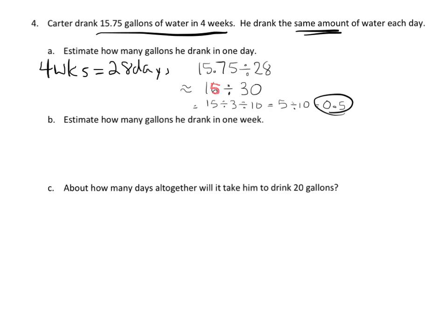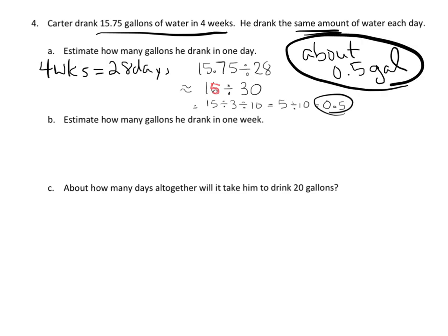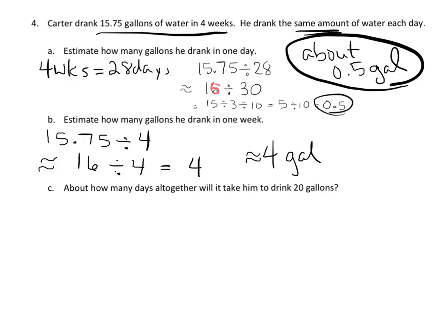So our estimation for one day is about 0.5 gallons — about half a gallon per day. Now, estimate how many gallons he drank in one week. We take 15.75 and divide by 4 weeks. I'll estimate that as 16 divided by 4, which gives us 4. So about 4 gallons per week.